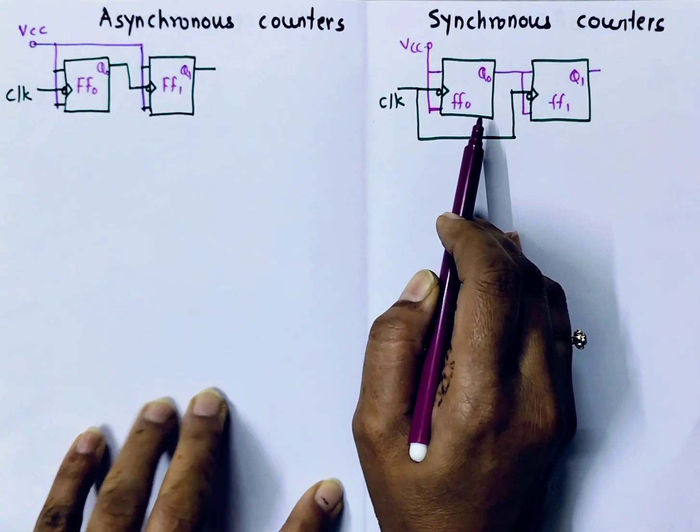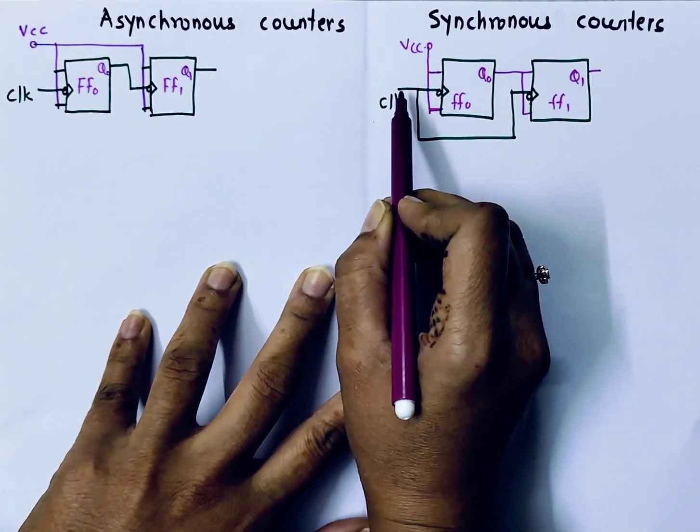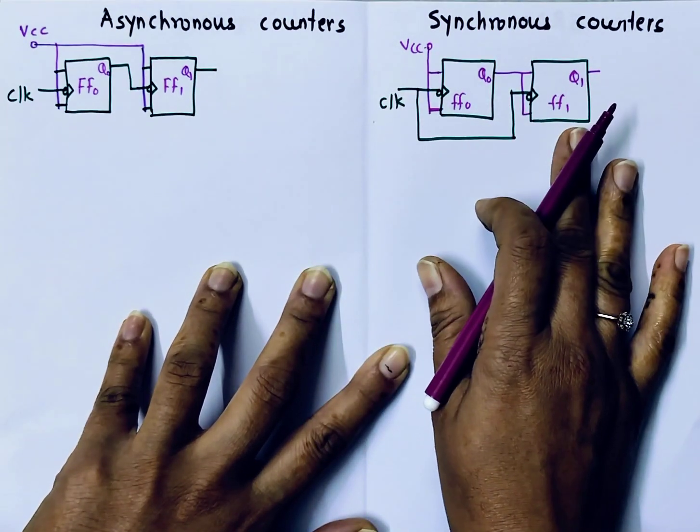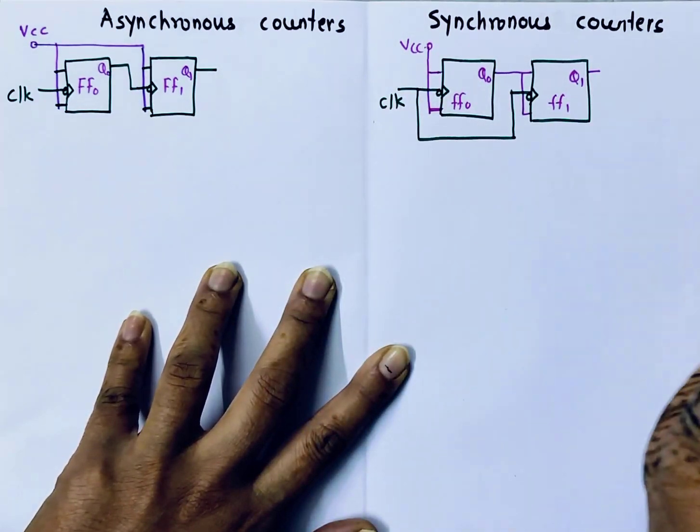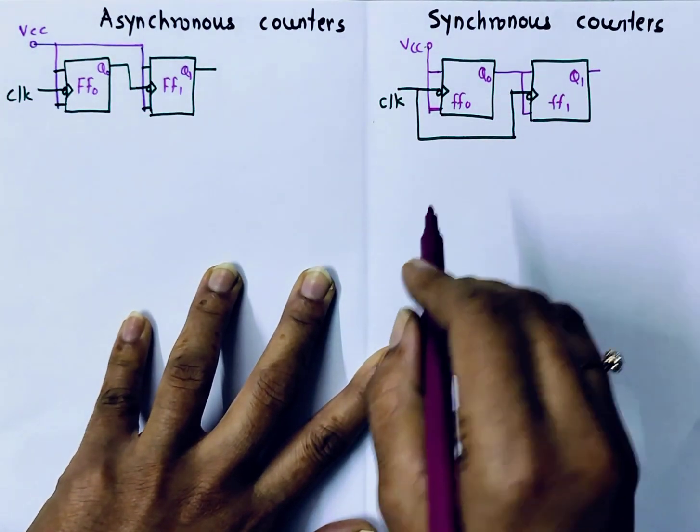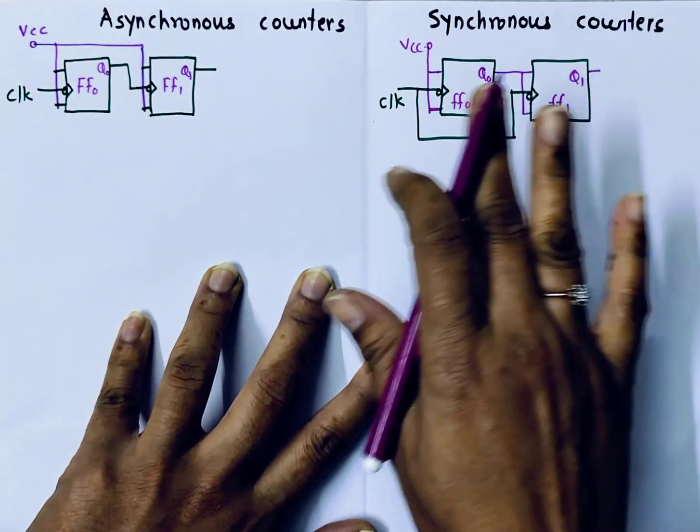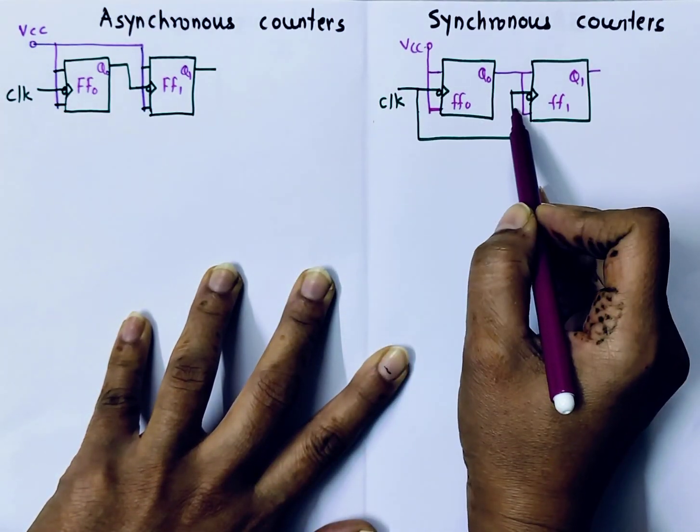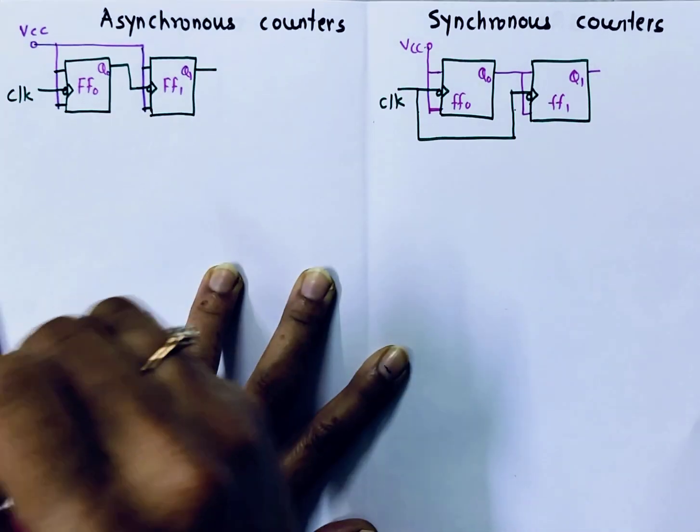Whereas, in case of synchronous counter, single external clock drives all flip-flops. Here I have taken only two flip-flops, but you can connect as many flip-flops as you want. For two bits, two flip-flops. For more number of bits, you will take more flip-flops. Here you can see external clock is given to all flip-flops parallely.